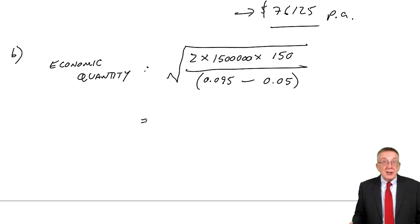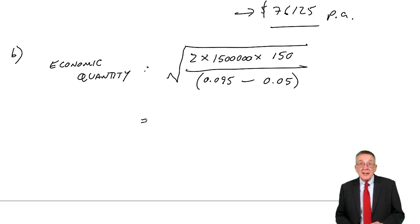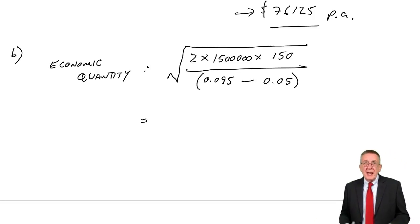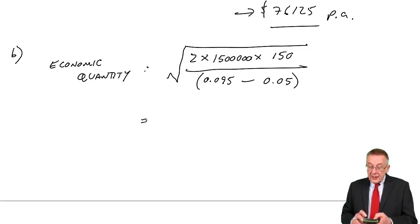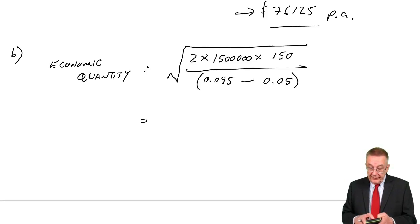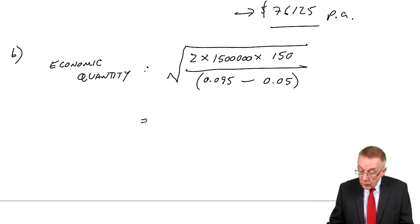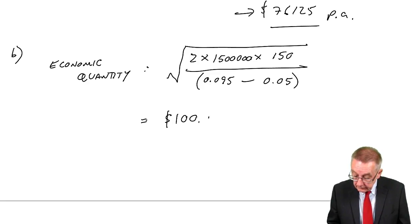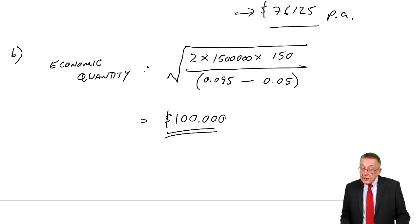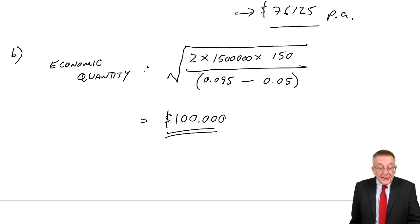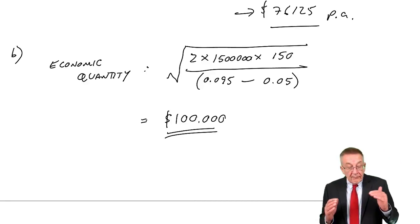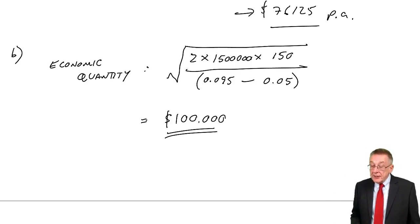Working that out: 2 times 1.5 million times 150 divided by 0.045, and taking the square root, gives us $100,000. So that's the economic quantity. We did part A selling $150,000 each time, but the cheapest cost would be to sell $100,000 each time.